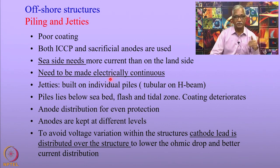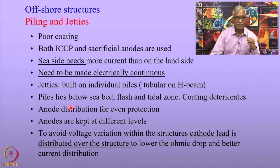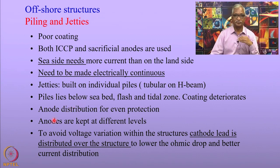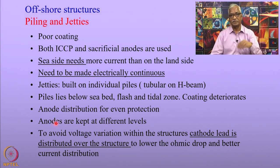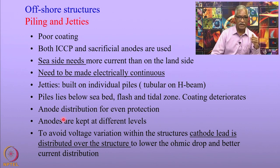If protecting cathodically from onshore, the structure must be electrically shorted so that current flows. If you have structures offshore, the anodes need to be kept at different levels so that the current is uniformly distributed in the structures. Anode distribution is very important for even distribution of current and therefore even protection of the structures.